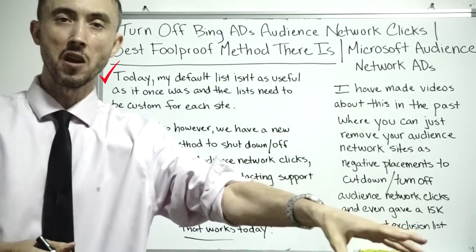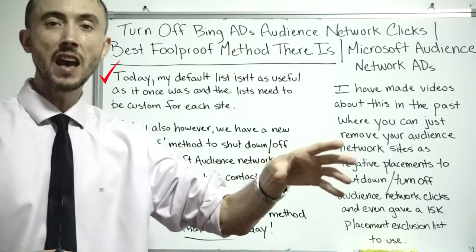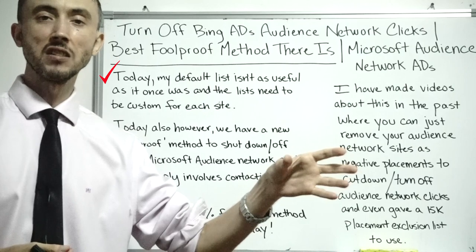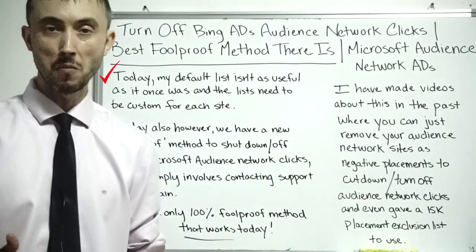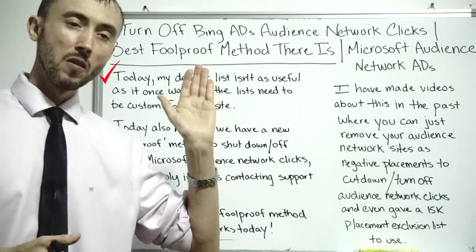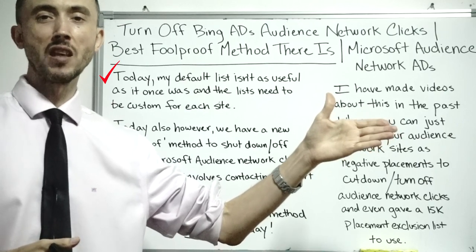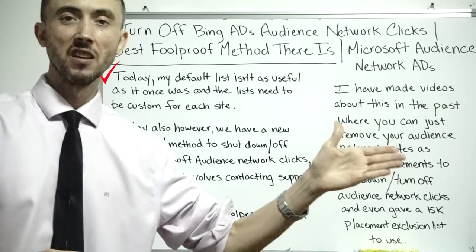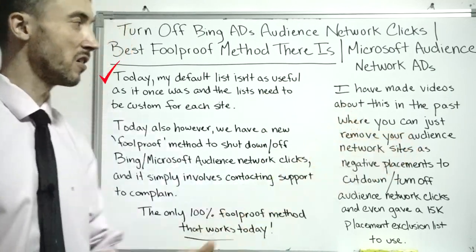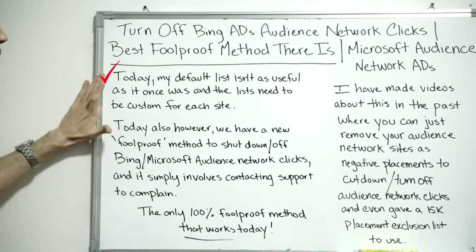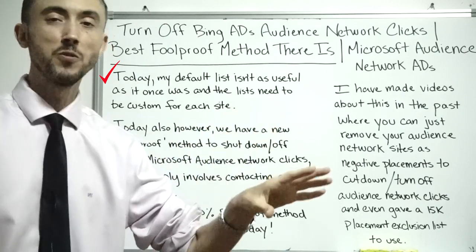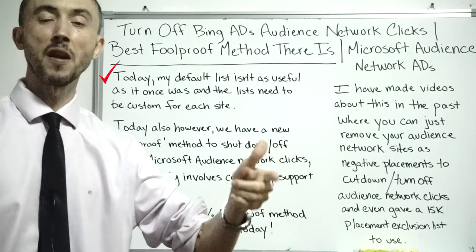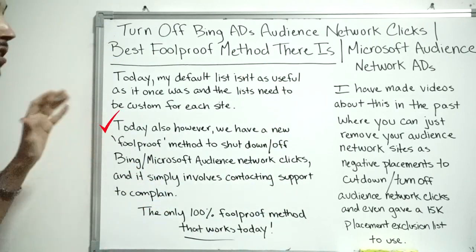I also realized that the sites you show up on vary based on your niche and keywords, so a default list isn't nearly as effective — you really need to build a placement exclusion list unique to your business. Furthermore, you can only add a 15,000 website exclusion list. If they allowed unlimited exclusions, a list of 300,000 websites would probably block them all. I think the 15,000 cap is partly because they don't want you to totally block every possible audience network click, since that's their bread and butter.